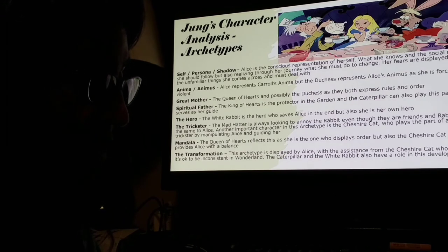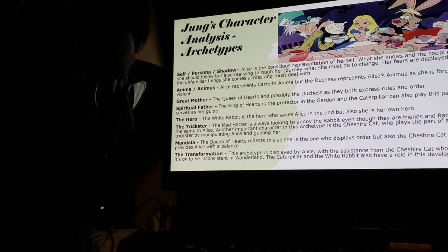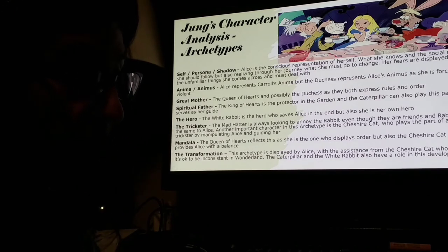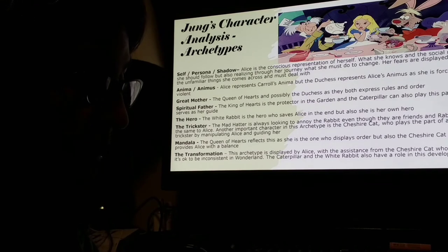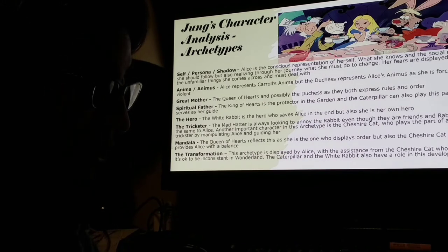The Queen of Hearts represents the great mother, as does the Duchess, as they both express rules and order. The trickster is the Mad Hatter, as he is always looking to annoy the Rabbit even though they are friends, and the Rabbit does the same to Alice. Another important character in this archetype is the Cheshire Cat, who plays the part of a helpful trickster by manipulating Alice and guiding her. The Queen of Hearts reflects the mandala as she displays order, but also the Cheshire Cat, who provides Alice with balance.